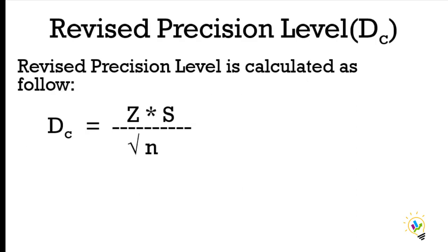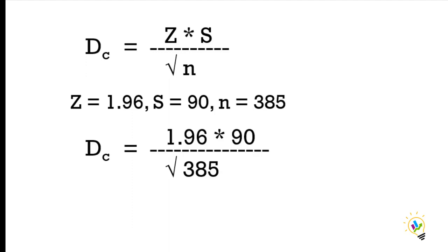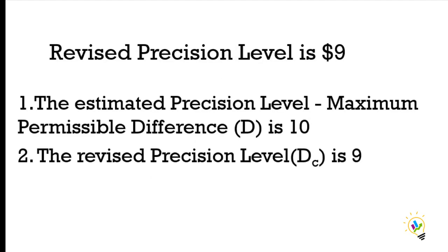The formula for revised precision level is: dc = z times s divided by square root of n. With z = 1.96, s = 90, and n = 385, substituting into the equation gives dc ≈ 8.99, approximately 9. So the revised precision level is 9. The assumed precision level was 10, meaning the precision level has been reduced.